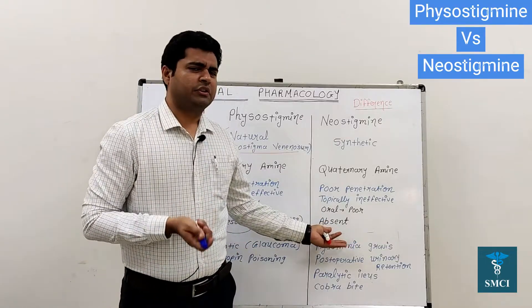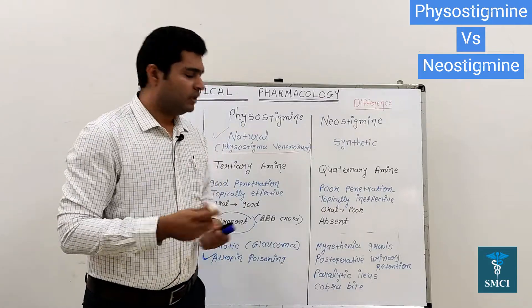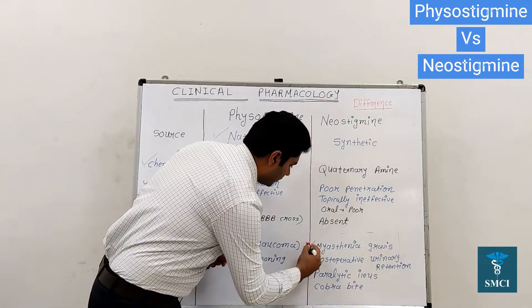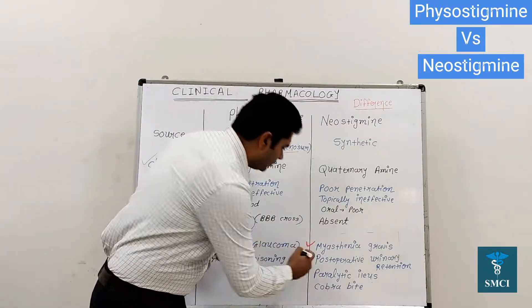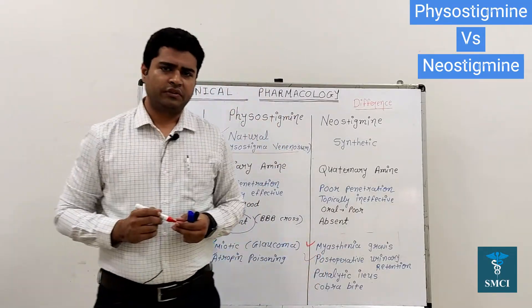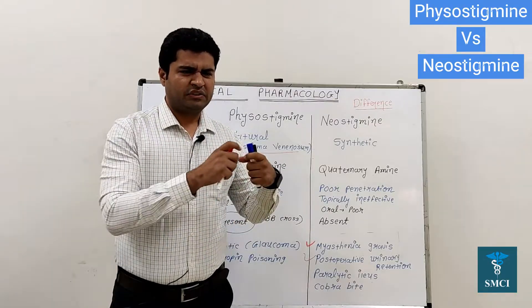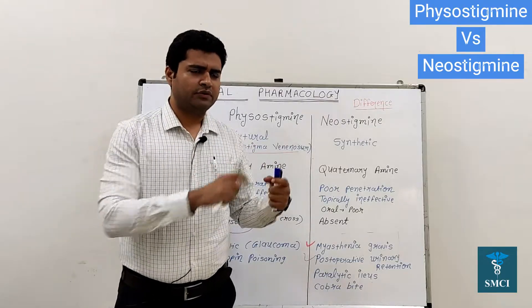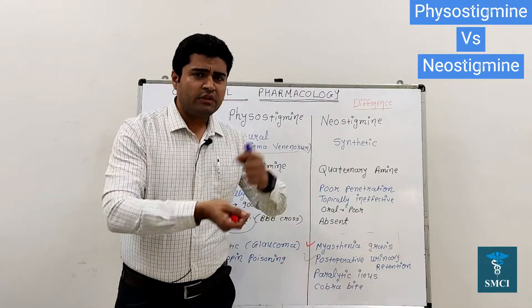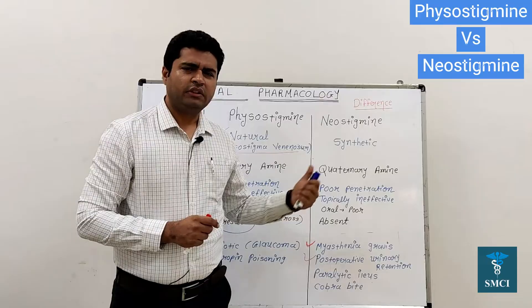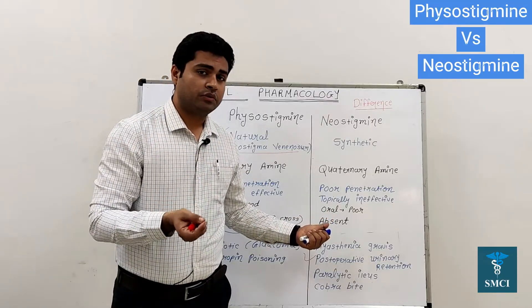Now for neostigmine — we use it mainly in myasthenia gravis, in which we need reversal of the action at the skeletal muscle. We also use it in post-operative urinary retention. If after an operation the GI tract or urinary tract is not properly functioning and they are in a relaxed state, we need to counter that effect. For this, we use neostigmine mainly subcutaneously or IV.